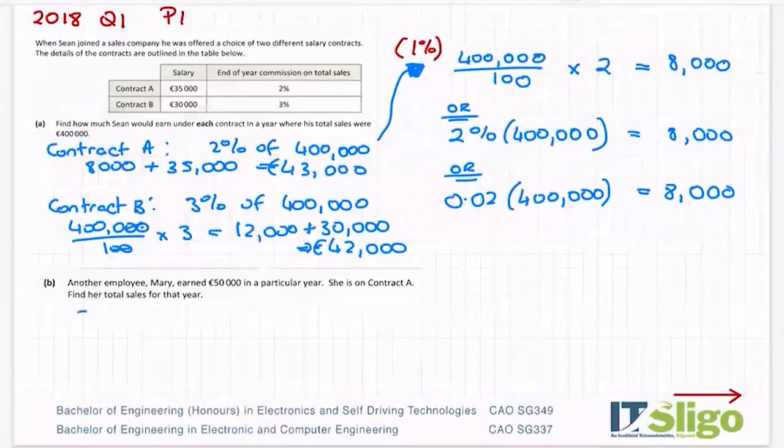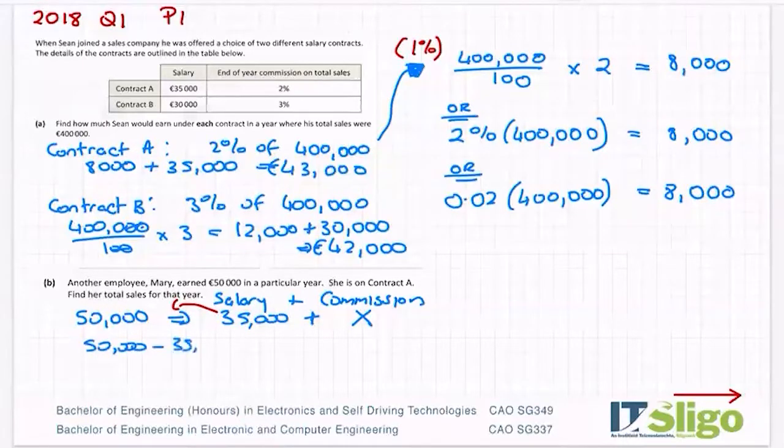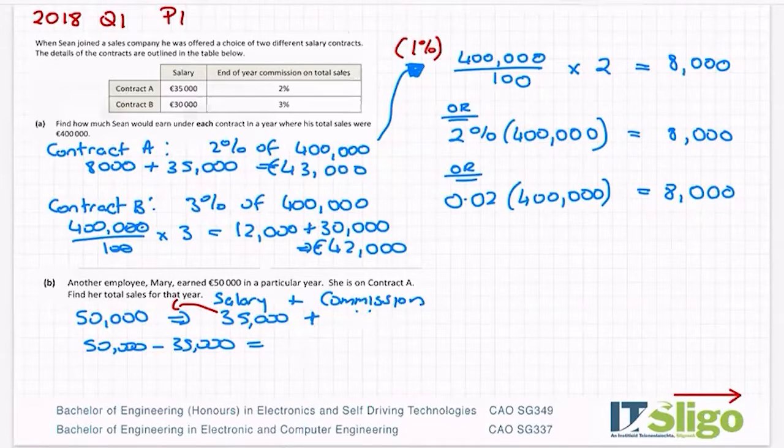How would I write that out mathematically? Well, her wages is 50,000. So it's made up of salary plus commission. So it's 35,000 plus, will we call it x? Let's subtract the 35,000 from both sides and you will get 50,000 minus that 35,000 equal to x. So 15,000 is equal to x.